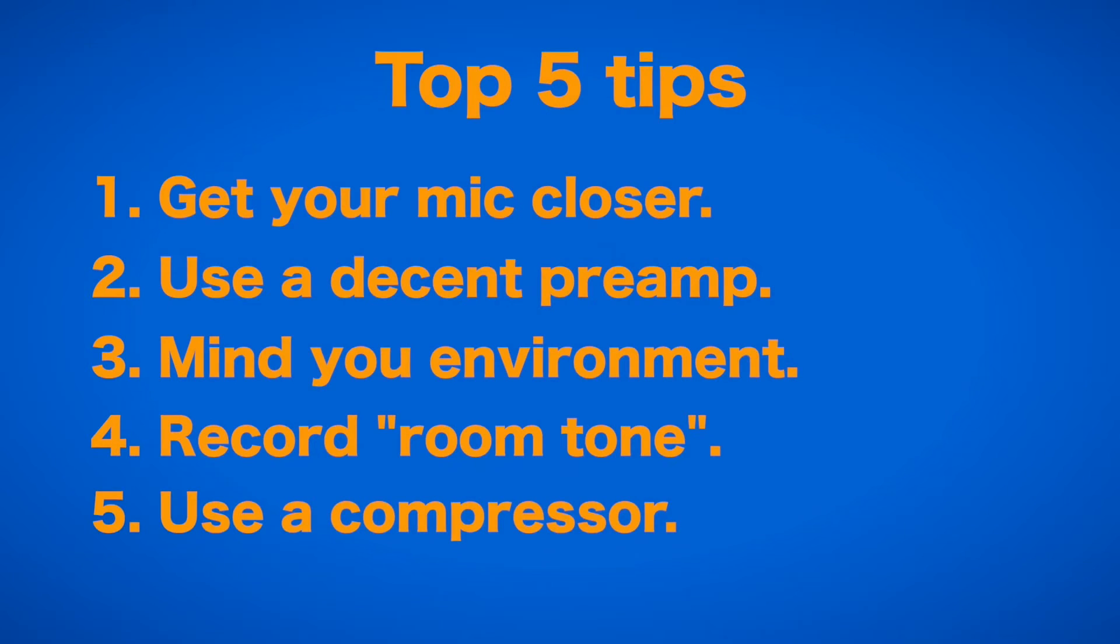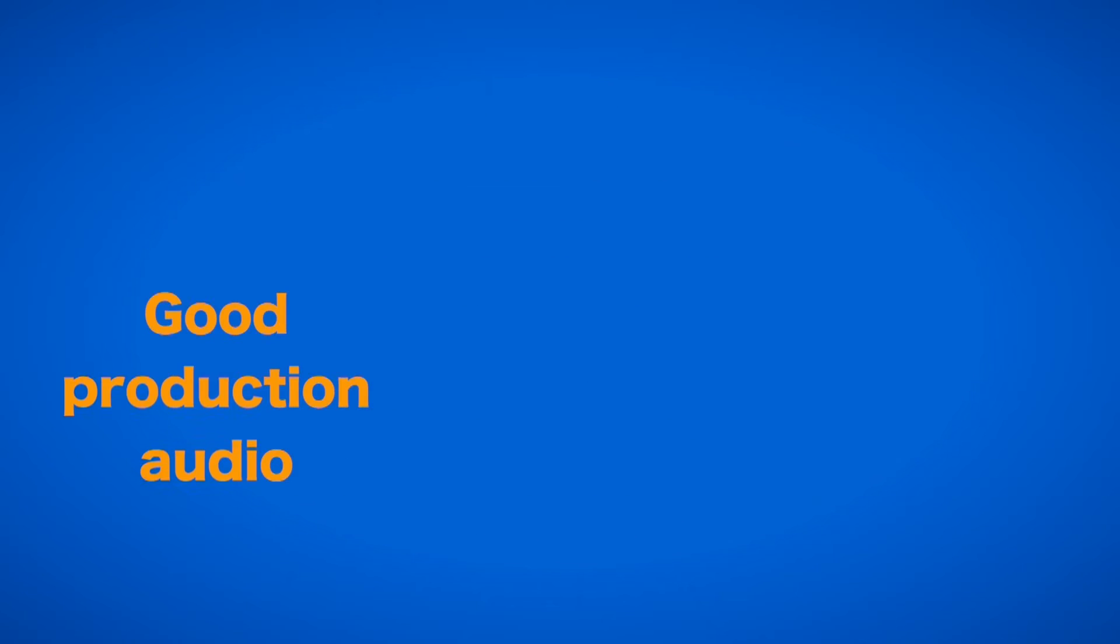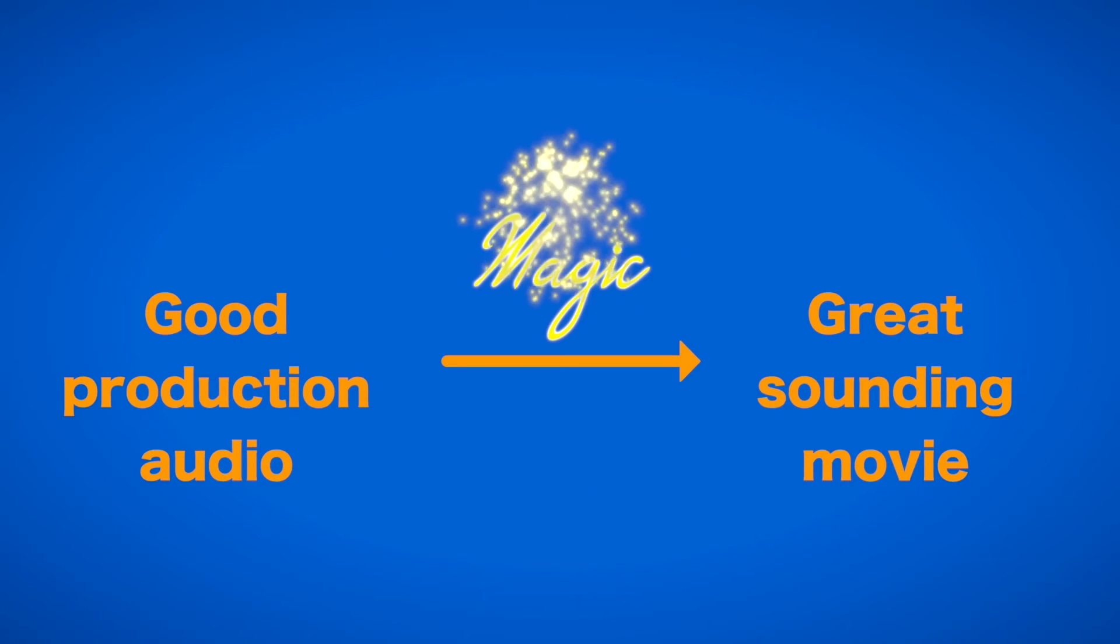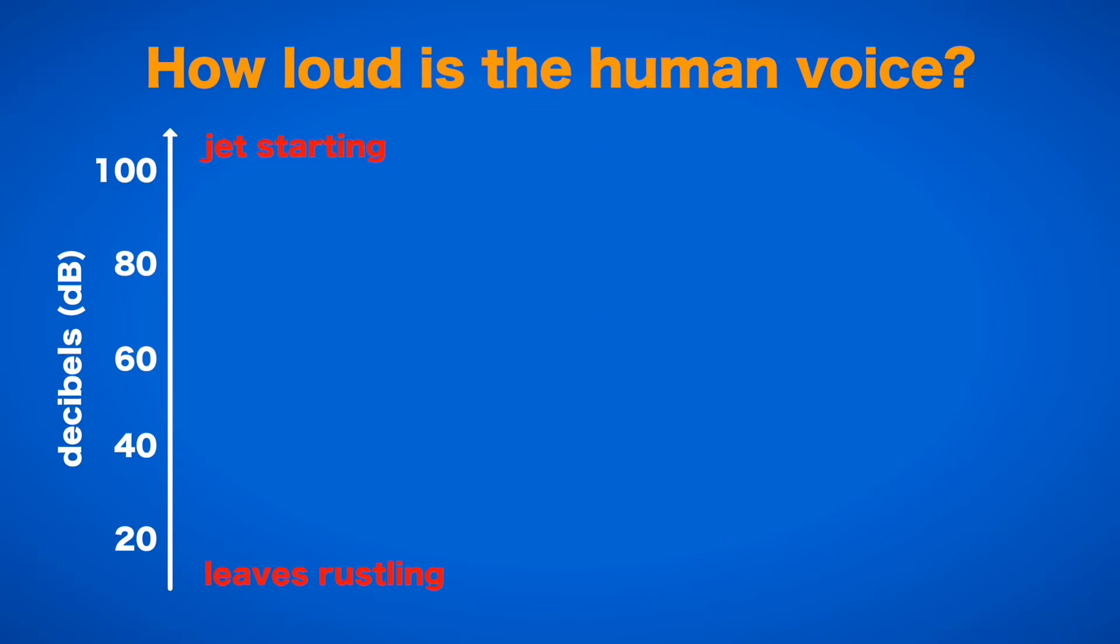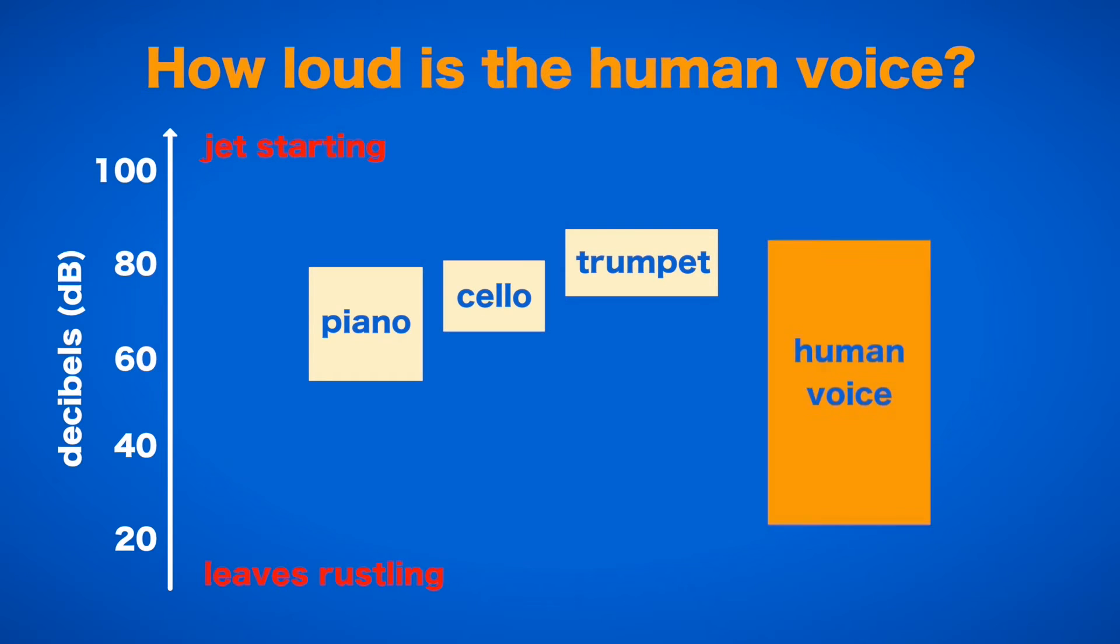The fifth tip is, use a compressor. Now that we have hopefully captured good production audio, we move into post-production. The human voice has a very wide amplitude range. It can go very soft, but also surprisingly loud. Since this is already captured nicely in the sound quality of the voice, we can easily compress the actual signal level to make the very low volume sound a little louder.